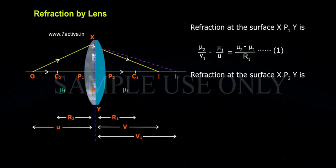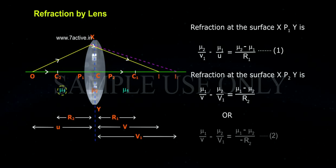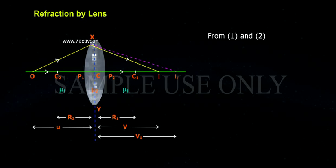Refraction at the surface X, P2, Y is Mu1 by V minus Mu2 by V1 equals to Mu1 minus Mu2 by R2. Or Mu1 by V minus Mu2 by V1 equals to Mu1 minus Mu2 by R2.